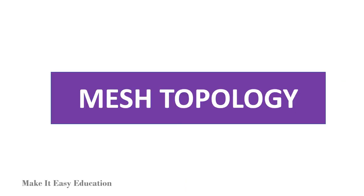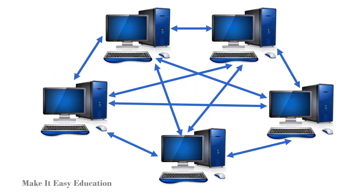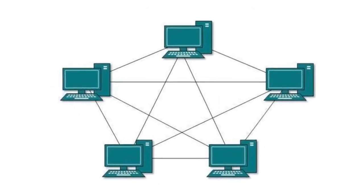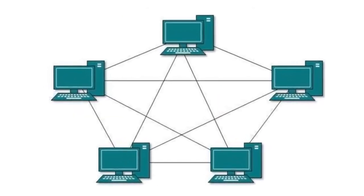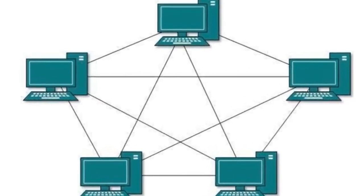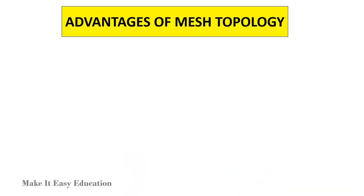Mesh topology. In mesh topology, each device is connected to every other device on the network through a dedicated point-to-point link. If there are N devices in the network, then each device must be connected with N-1 devices of the network.